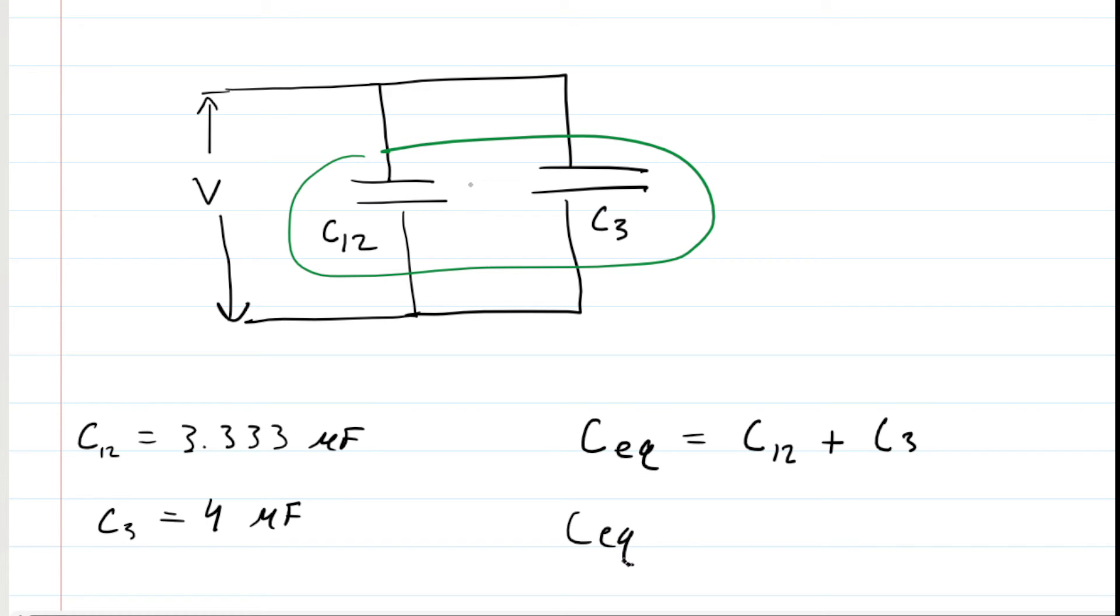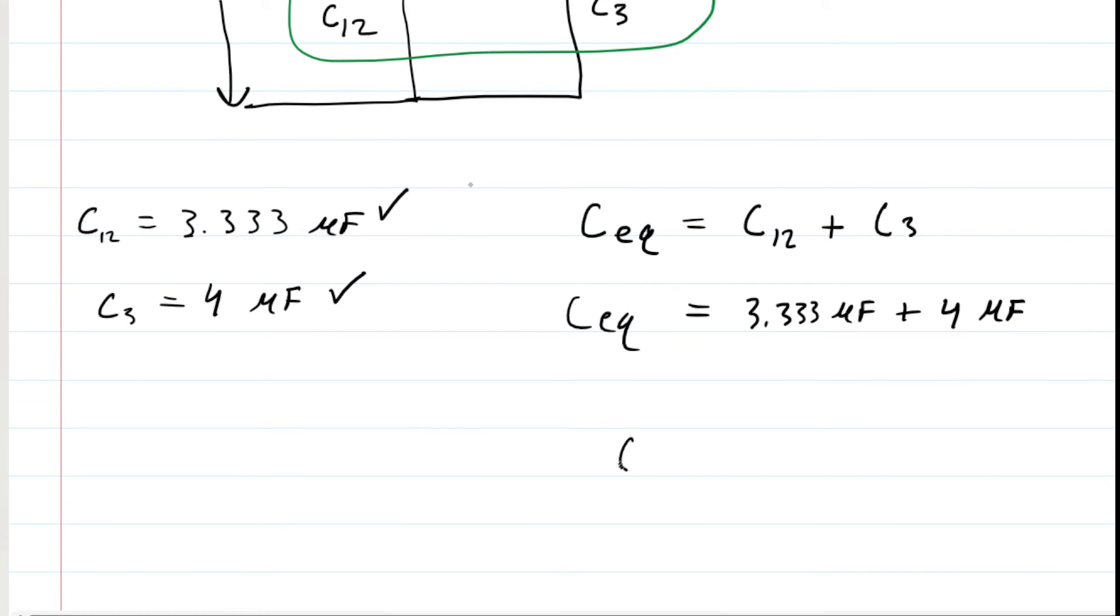We can plug in the known values. We calculated C12 a moment ago, and C3 was given. When you add these together, you will get an overall equivalent capacitance of 7.3 microfarads.